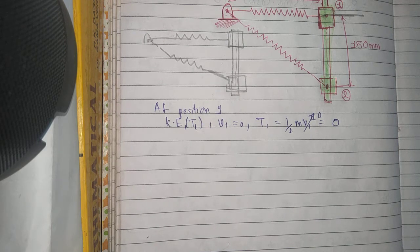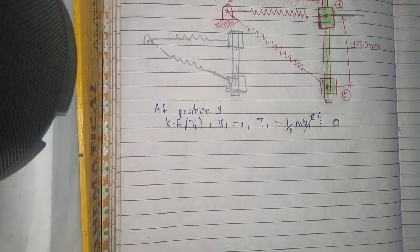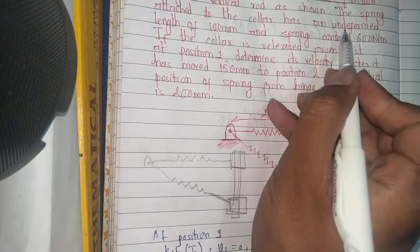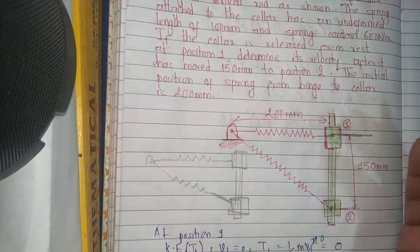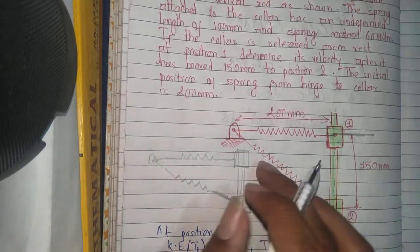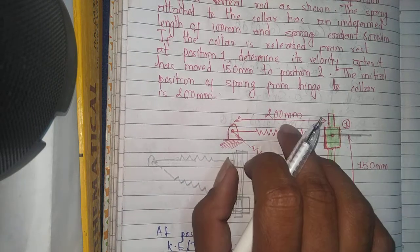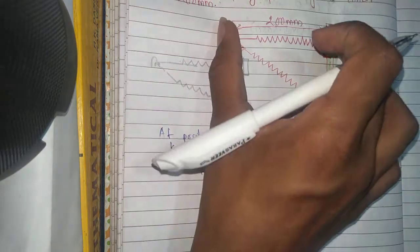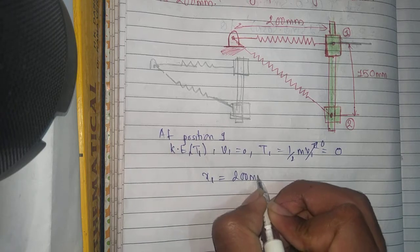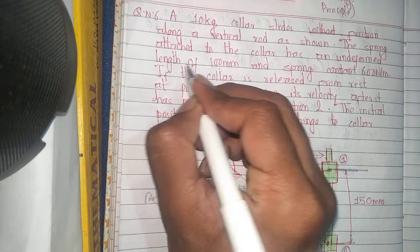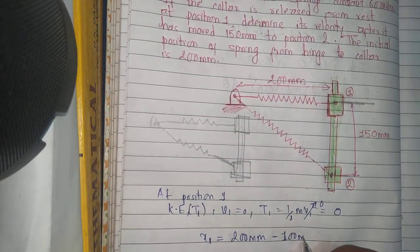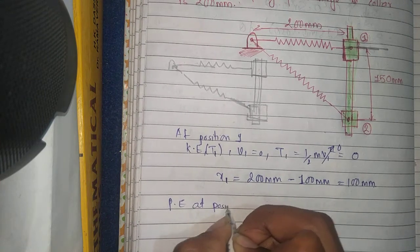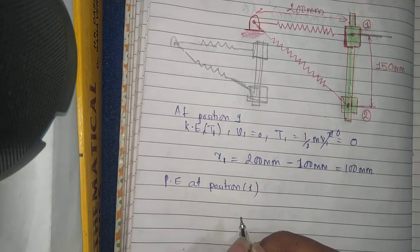To find the potential energy we must know the extension produced in the spring. The natural length of the spring is 100 millimeters and the given length at position one is 200 millimeters. So the extension at position one, x1, equals 200 minus 100 millimeters, which equals 100 millimeters.